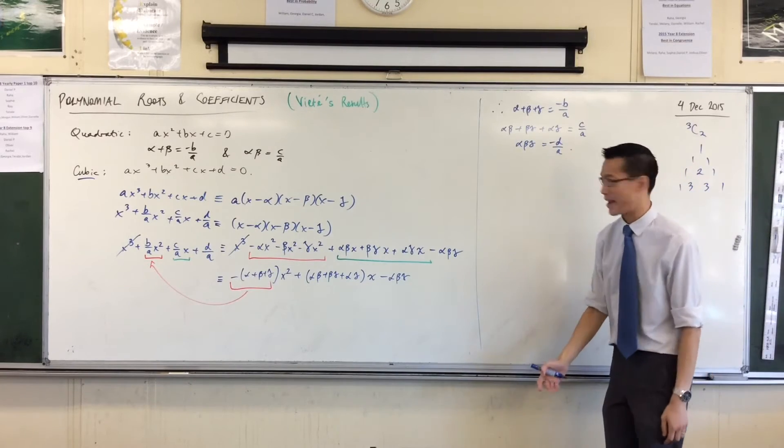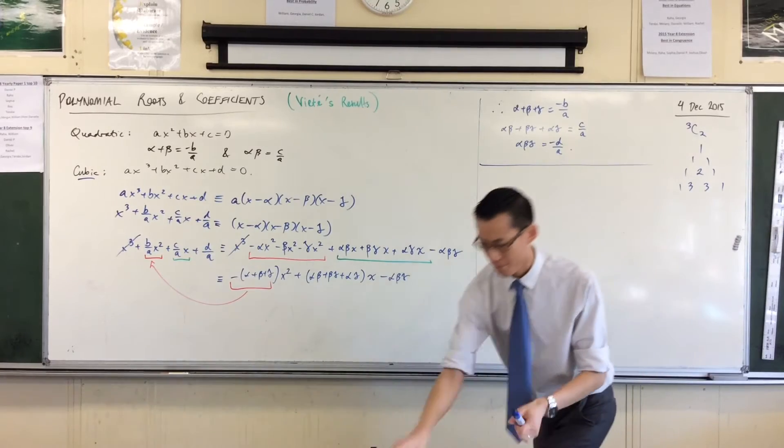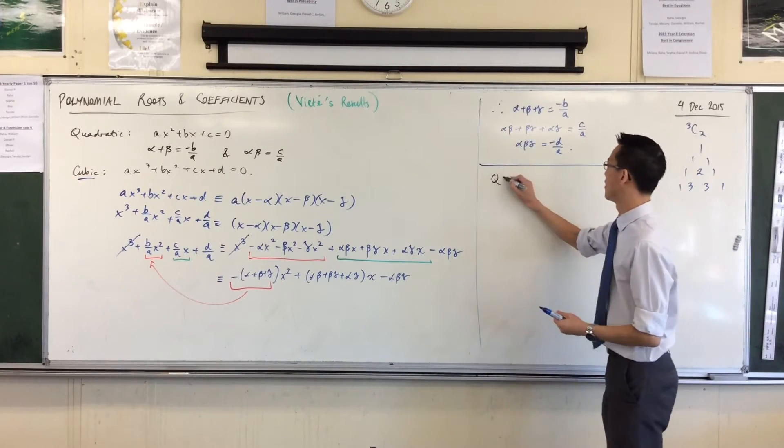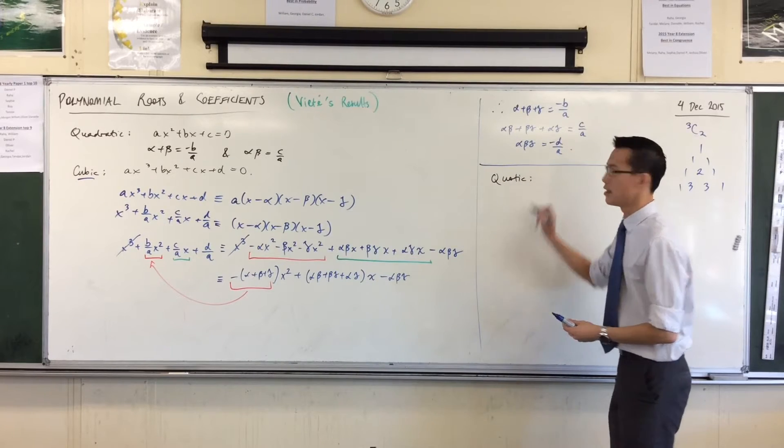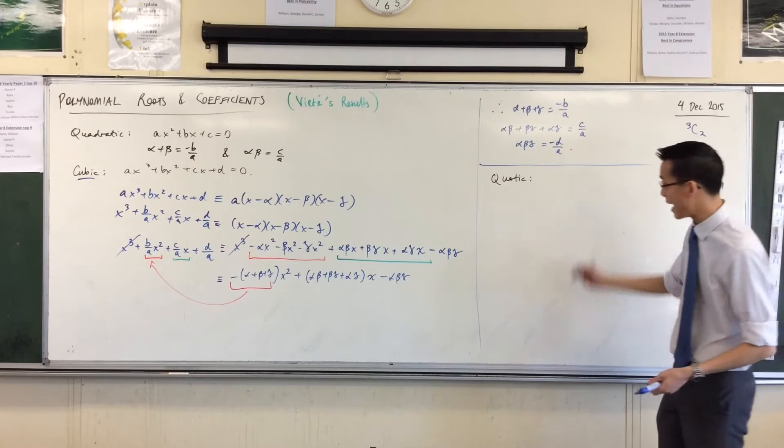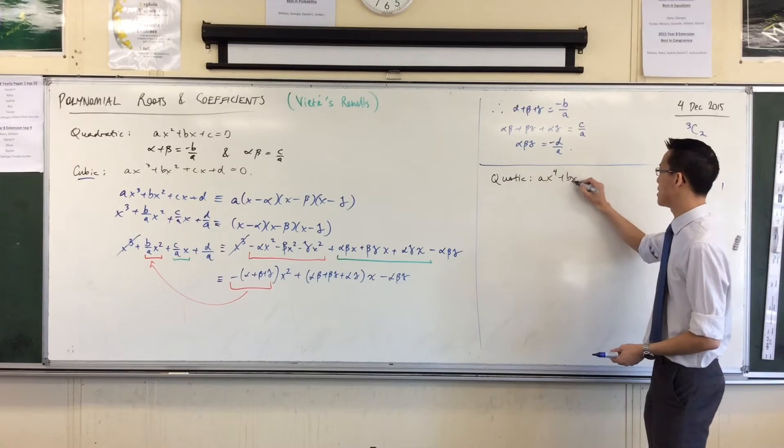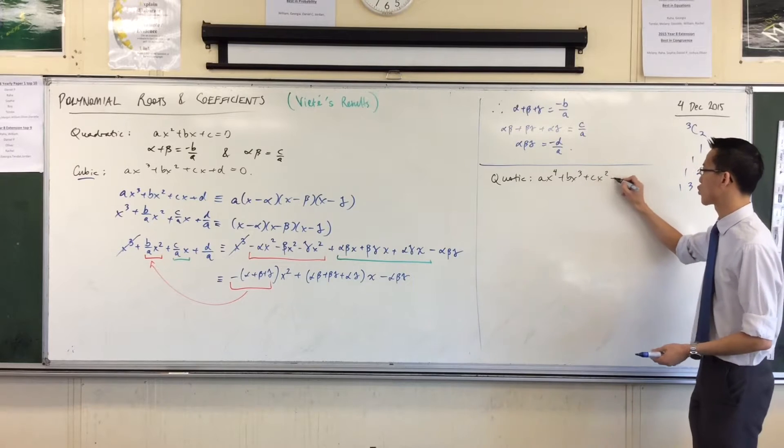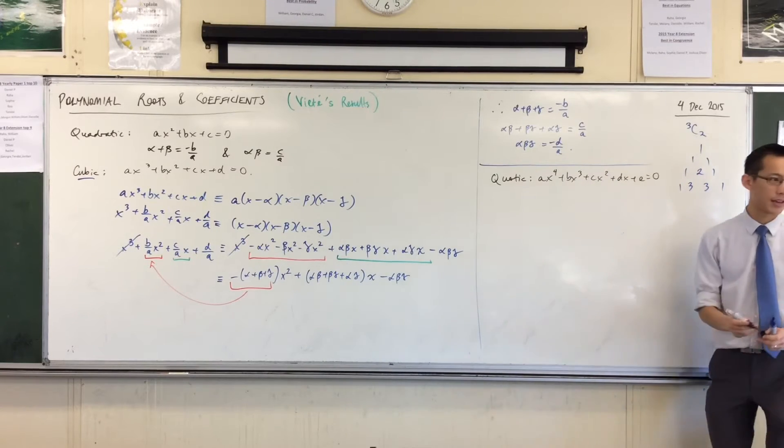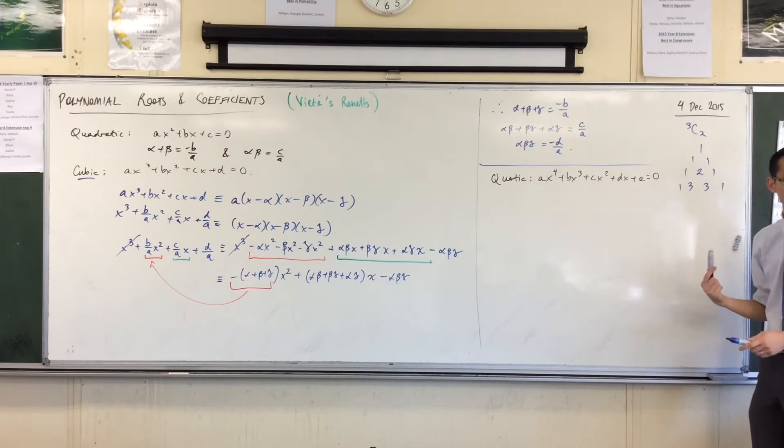Without actually doing the whole expansion for a quartic, what could we say? For a quartic, we're going to take the same pattern, like make the leading coefficient a. So I've got ax to the 4th plus bx cubed plus cx squared, all the way down to here. So, here's a general quartic. It has 5 coefficients in here.